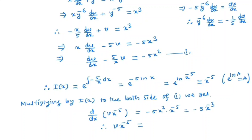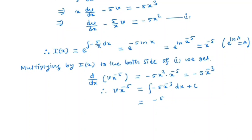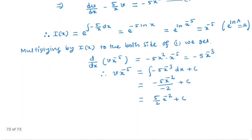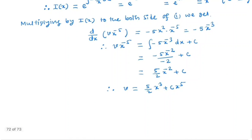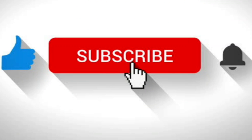So v times x to the power minus 5 equals the integral of minus 5 x to the power minus 3 dx plus C, which gives minus 5 times x to the power minus 2 over minus 2 plus C, equal to 5 over 2 times x to the power minus 2 plus C. So v equals 5 over 2 times x cubed plus C x to the power 5. Since v is y to the power minus 5, the general solution is y to the power minus 5 equals 5 over 2 x cubed plus C x to the power 5. Thank you.